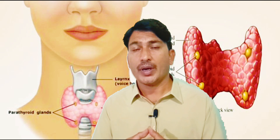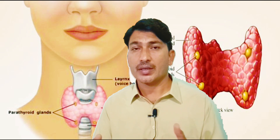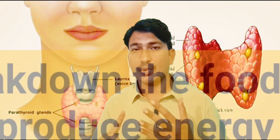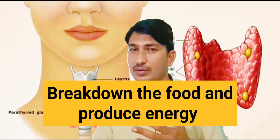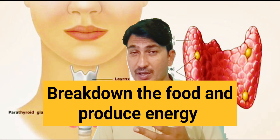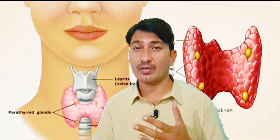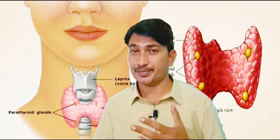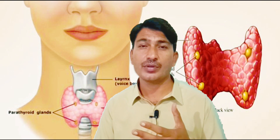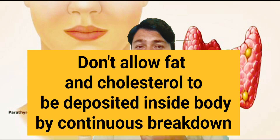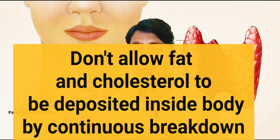Both T3 and T4 hormones, when released in our body, increase the metabolism. They break down carbohydrates — they break down glucose, which is the monomer or single unit of carbohydrates. They break down proteins, they break down fats and lipids, and do not allow the deposition of fats inside our body because they are breaking them down according to the need of the body.